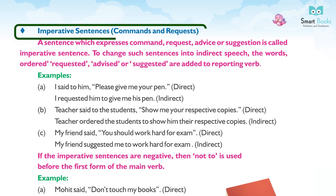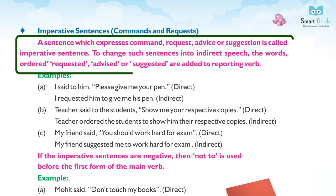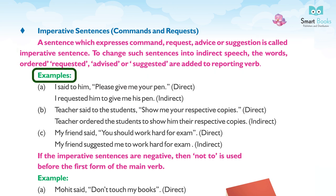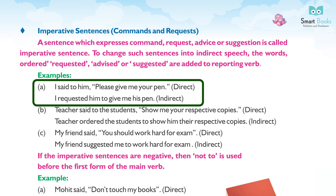Imperative sentences — commands and requests. A sentence which expresses a command, request, advice, or suggestion is called an imperative sentence. To change such sentences into indirect speech, words like 'ordered', 'requested', 'advised', or 'suggested' are added to the reporting verb. Example: I said to him, 'Please give me your pen.' (Direct) → I requested him to give me his pen. (Indirect)